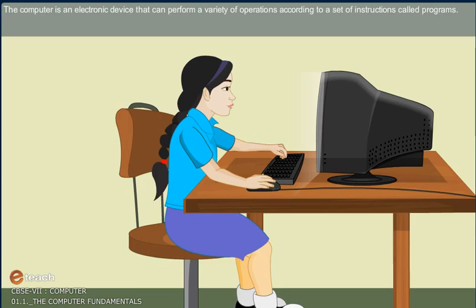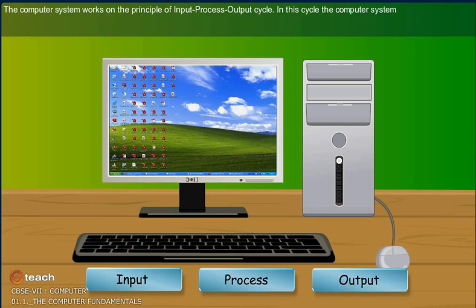The computer is an electronic device that can perform a variety of operations according to a set of instructions called programs. The computer system works on the principle of input-process-output cycle.